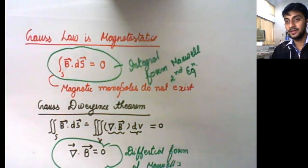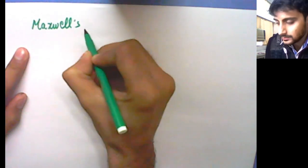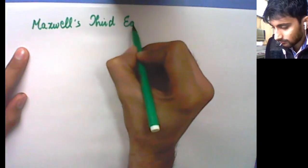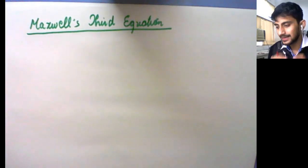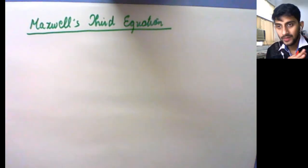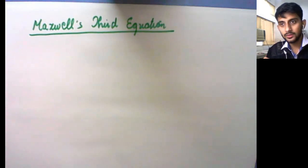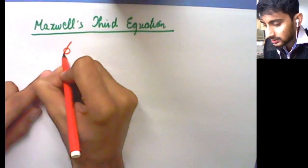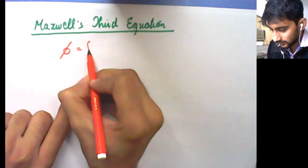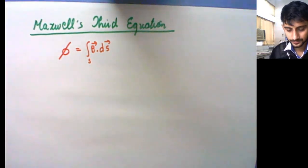Now we move on to the derivation of Maxwell's third equation. The third equation will be related to magnetic flux density. The flux or magnetic flux coming out of an area is given by B·dS. We know that over a closed surface this is zero, but here we are considering an open surface, not a closed surface.